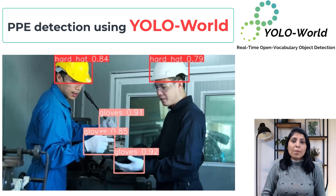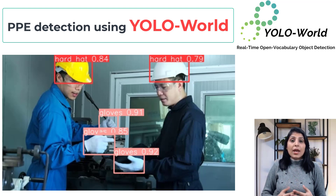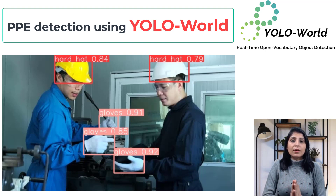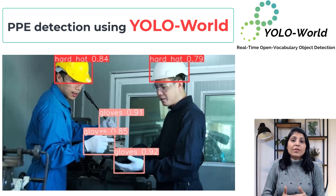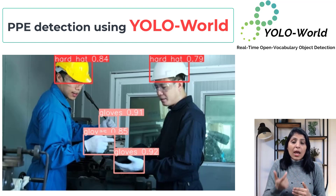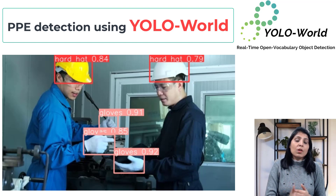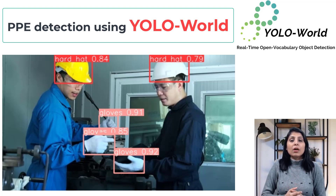Personal protective equipment like hard hat and gloves. Generally, whenever we want to perform custom object detection, what we do is we first provide training data to our algorithm, then the algorithm gets trained on that data. After learning, we get a trained model and using that trained model we perform custom object detection. This is how we work using the traditional object detection models.